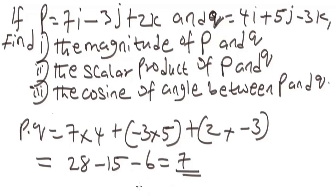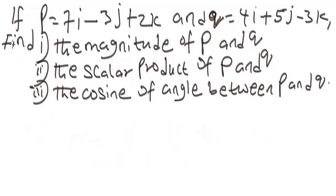Let's solve the last question, which is the cosine of the angle between P and Q. The cosine of the angle between vector P and Q will be cos theta equals the scalar dot product divided by the magnitude of P times the magnitude of vector Q.